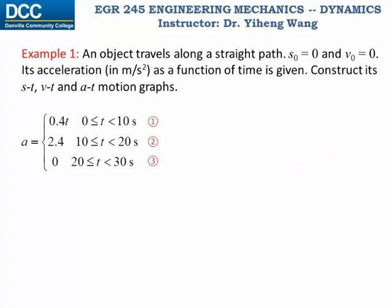For the first example, we are given the piecewise function of acceleration as a function of time. We also know that the initial position and initial velocity are both zero. We are asked to construct the s-t position-time graph, v-t velocity-time graph, and a-t acceleration-time graph.